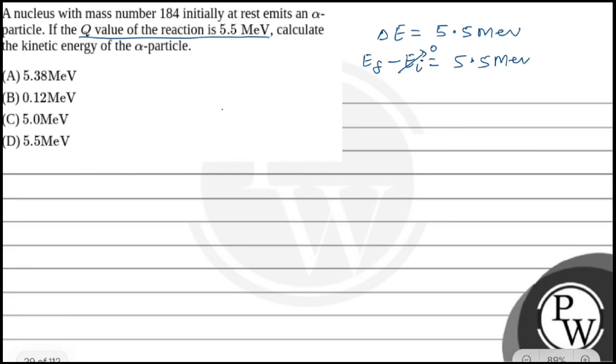Finally, kinetic energy of alpha particle plus kinetic energy of nucleus equals 5.5 MeV. So we can write: (1/2)(4)v² + (1/2)(180)(4v/180)² = 5.5 MeV.